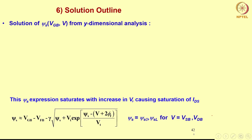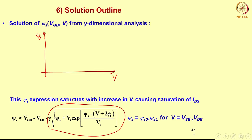This is the reason why Ids saturates in our theory — because the surface potential ψs saturates. I gave it as an assignment to show that this expression for ψs saturates. In case you had difficulty, let me quickly give you a hint. This is ψs as a function of V. You can see that the exponential term has a negative sign, so I can push that term to the left-hand side, putting all ψs-dependent terms on the left. Concentrate on this particular exponential.